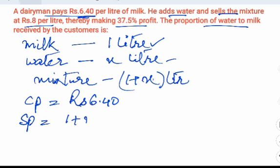And the selling price is he sells the whole mixture at 8 rupees per liter. So 1 plus x into 8, that is 8 plus 8x.